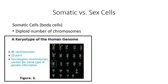Somatic cells have a diploid number of chromosomes. If we look at the karyotype of the human genome, you'll see that it has 46 chromosomes — 23 what are called homologous pairs of chromosomes, for a total of 46. This is referred to as a diploid number of chromosomes, and you can also refer to somatic cells as being diploid cells.